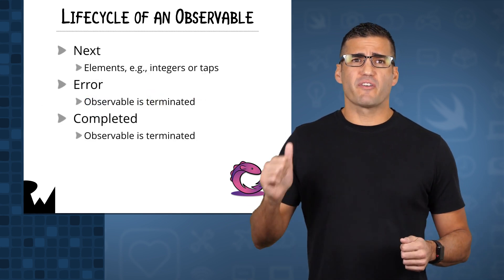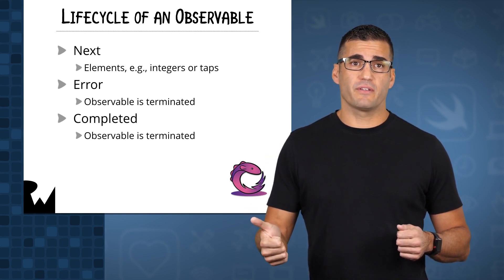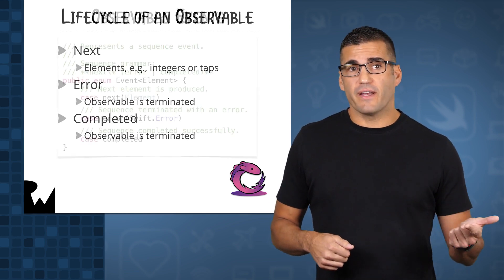So, to recap, observables can emit next events containing elements such as values or tap events. And observables are terminated when they emit an error event or a completed event. Want to see that in code? Of course you do!